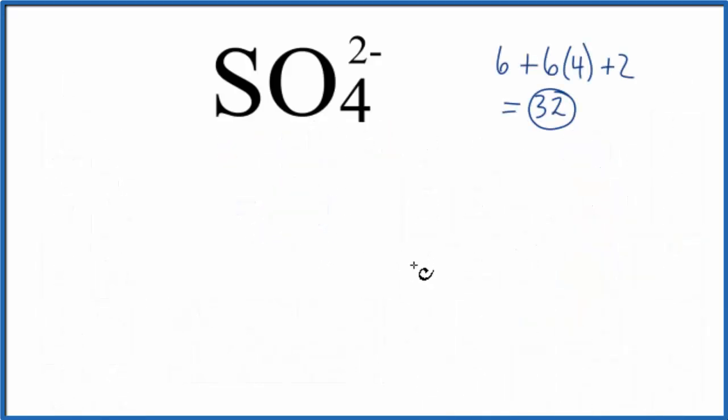So we'll start by putting the least electronegative element in the center. That's going to be the sulfur. Put the sulfur in the center. And then we'll put 4 oxygen atoms around it.